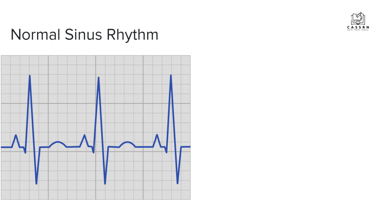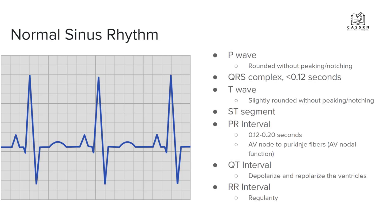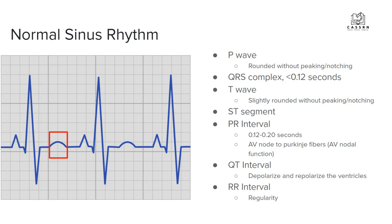Let's review. The P wave should be rounded without peaking or notching — it should look more like the T wave on this image. Then you've got your QRS complex, which should be less than 0.12 seconds — this is the depolarization of the ventricles. Then you've got the T wave, which should be slightly rounded without peaking or notching, representing the repolarization of the ventricles. It is hypothesized that you can't see the repolarization of the atria on the EKG because the depolarization of the ventricles is so strong that it covers it up.